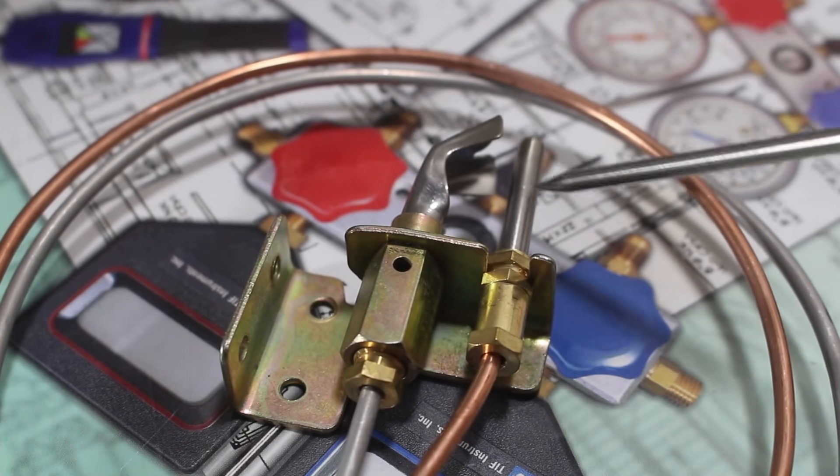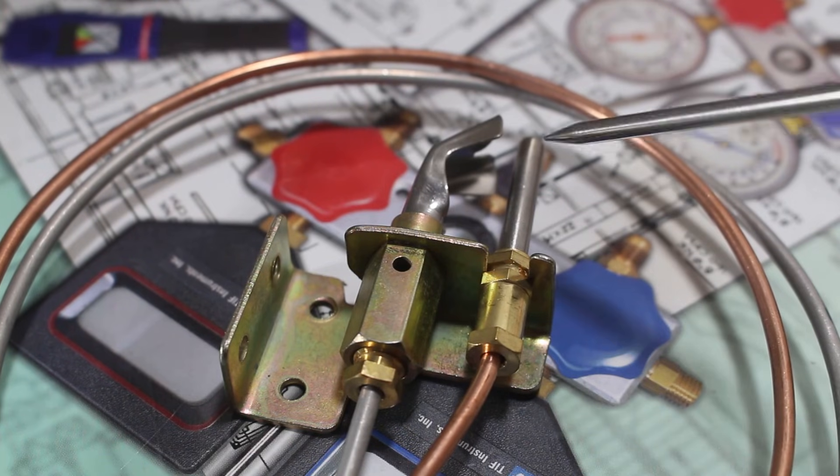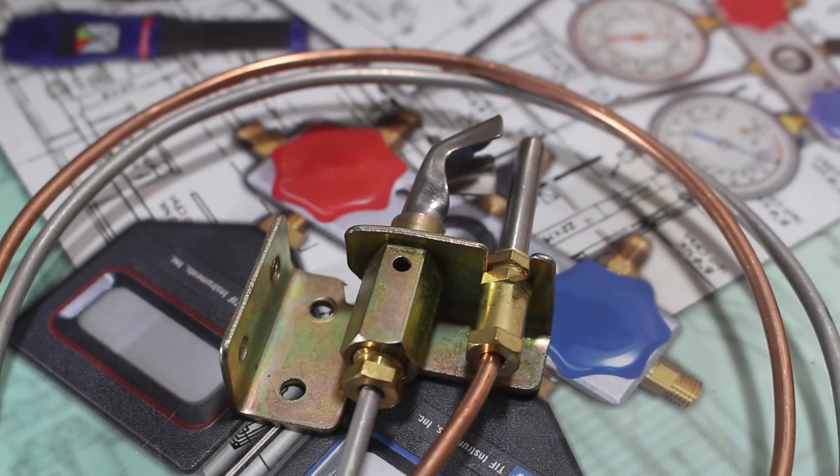So once this generates enough millivolts, which is 30 millivolts in this case, it's going to be able to send that voltage to the combination gas valve and hold open a solenoid allowing gas to flow. And that's basically how this works.